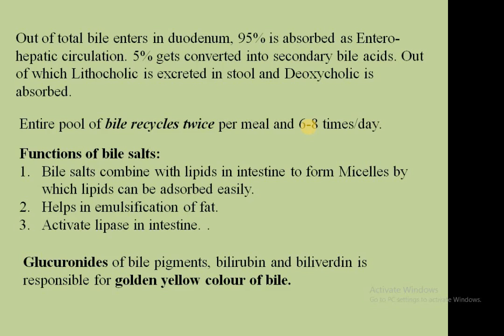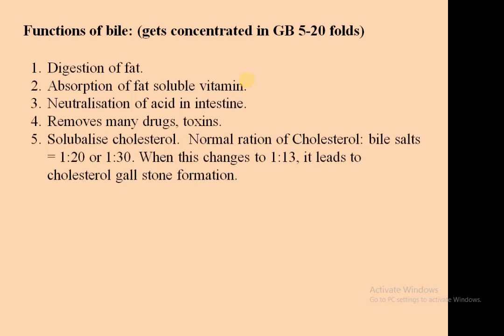The golden yellow color of bile is due to the bile pigments bilirubin and biliverdin. If the options include glucuronides, then glucuronides of bilirubin and biliverdin give the golden yellow color to bile. Bile gets concentrated in the gallbladder 5 to 20 folds. Bile helps in digestion of fat, absorption of fat-soluble vitamins, and neutralization of acid in the intestine — pancreatic juice also neutralizes intestinal acid.